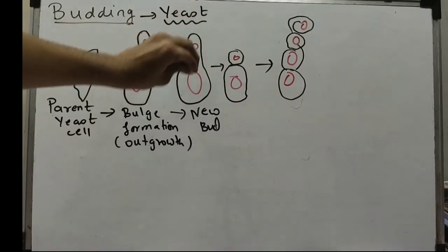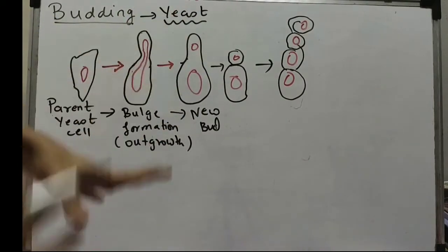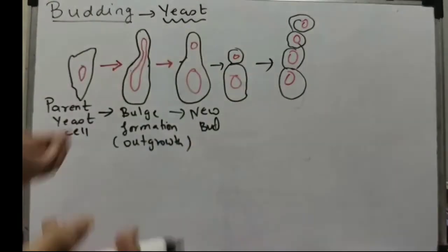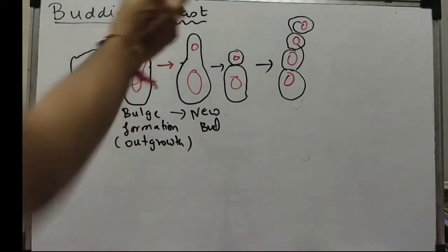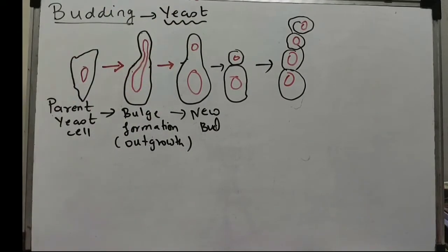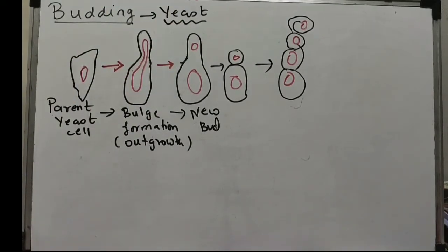Parent cell ke nucleus se whatever nutrients and everything, parent cell yeast ko dega. The nucleus will go, outgrowth dheere-dheere badhna shuru ho jayega and a simple thing will happen.